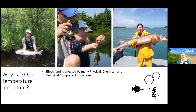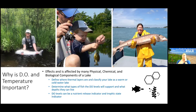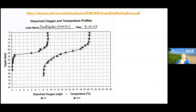So back to the question of why dissolved oxygen and temperature are important. We measure these parameters to define where the thermal layers are and to classify your lake as a warm or cold water lake. We use these measurements to determine what types of fish the DO levels will support and at what depths they can live. Dissolved oxygen levels can also be an indicator of nutrient releases and trophic state. When you collect your data, you'll be able to make graphs like this, plotting temperature shown with triangles and dissolved oxygen shown with circles.